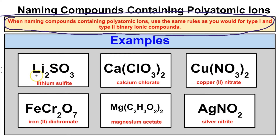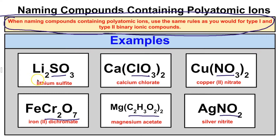We have chemical formulas that each contain a polyatomic ion. When we name these, we look at the cation and determine which group on the periodic table it comes from. If it comes from Group 1, Group 2, or is silver, zinc, or aluminum, it's Type 1. We just name the metal — for example, lithium — followed by the polyatomic ion. So that gives us lithium sulfite. Calcium is a Type 1 metal from Group 2, so we call it calcium followed by ClO3-, which is chlorate.